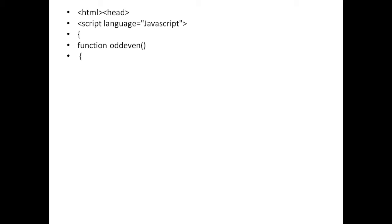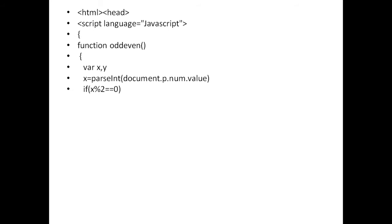I have started the braces of the function. Thereafter I am declaring two variables: x and y. I write x equal to parseInt(document.p.num.value). I am taking the value from the form using the document object, which is part of the DOM — that is, the Document Object Model. Here p is the form name from which the value will be extracted, and num is the variable defined in the form. The parseInt function removes spaces from the text box and extracts only the integer value, assigning it to variable x.